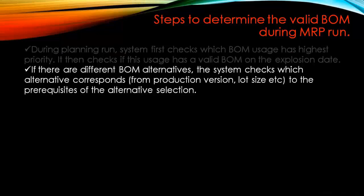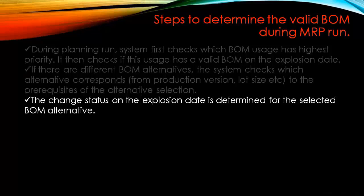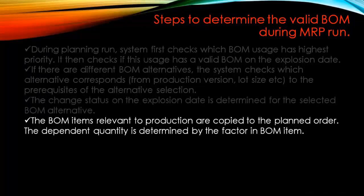Second, if there are different BOM alternatives, the system checks which alternative corresponds to the prerequisites of the alternative selection — for example, whether to select based on production version, lot size, or explosion dates. Third, the change status on the explosion date is determined from the selected BOM alternative. The BOM items relevant to production are then copied to the planned order — the system picks up the right BOM and copies its items to your production or planned order.